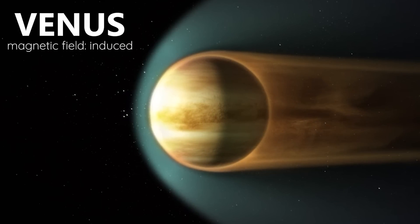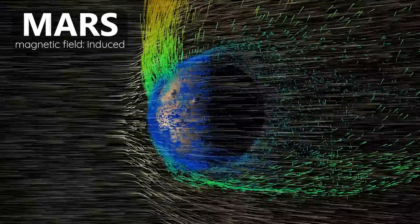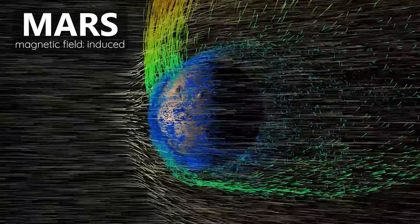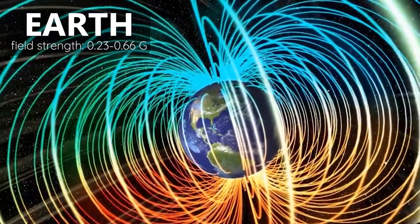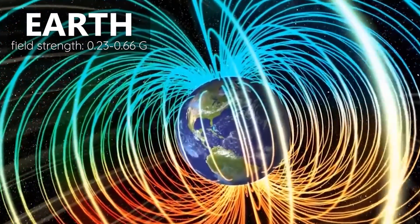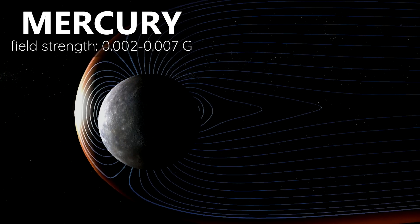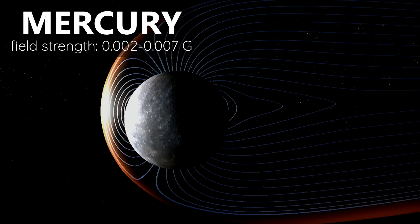Not every planet has a magnetic field. Venus and Mars don't have an internally generated magnetic field. Dwarf planets are unlikely to have them, but Earth is not alone in this solar system in having a magnetic field.